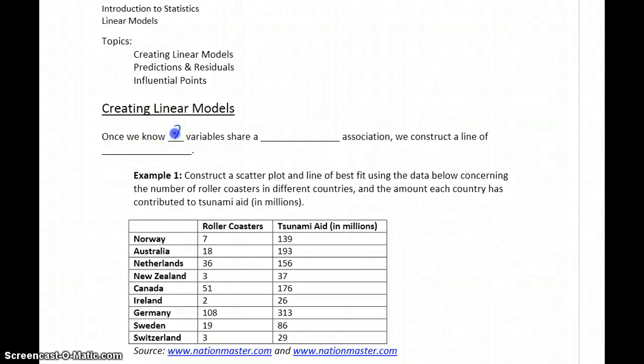Given two variables, once we know they share a linear association, we can construct a line of best fit. So a line that passes through all of our data points and gives us the best approximation of a linear trend going through those points.